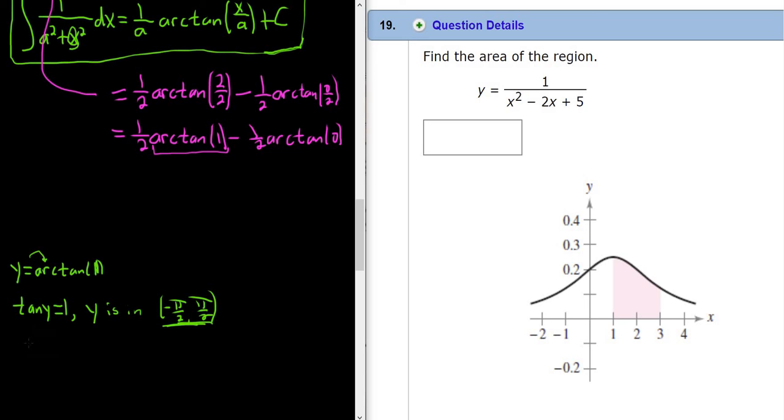Well, tangent is sine over cosine. So when are they the same between these numbers? Well, pi over 4. So y is pi over 4, right? Because the sine of pi over 4 is the square root of 2 over 2. The cosine of pi over 4 is the square root of 2 over 2. So when you divide them, you get 1. And pi over 4 is certainly between these numbers. So just pure memorization.